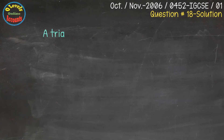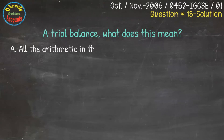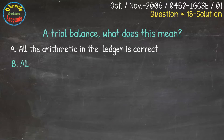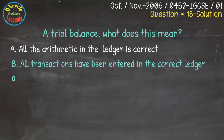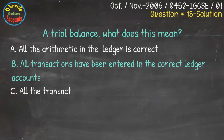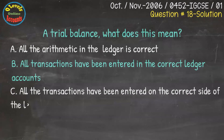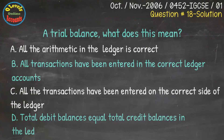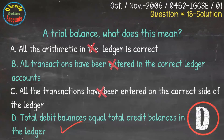We have question number 18 from October/November 2006, 0452 IGCSE Paper 1. In this question, what is meant by trial balance? Options are: A. All the arithmetic in the ledger is correct. B. All transactions have been entered in the correct ledger accounts. C. All transactions have been entered in the correct side of the ledger. D. Total debit balances equal total credit balances in the ledger. Total debit and credit balances are equal — this is the correct answer, available with the D option.